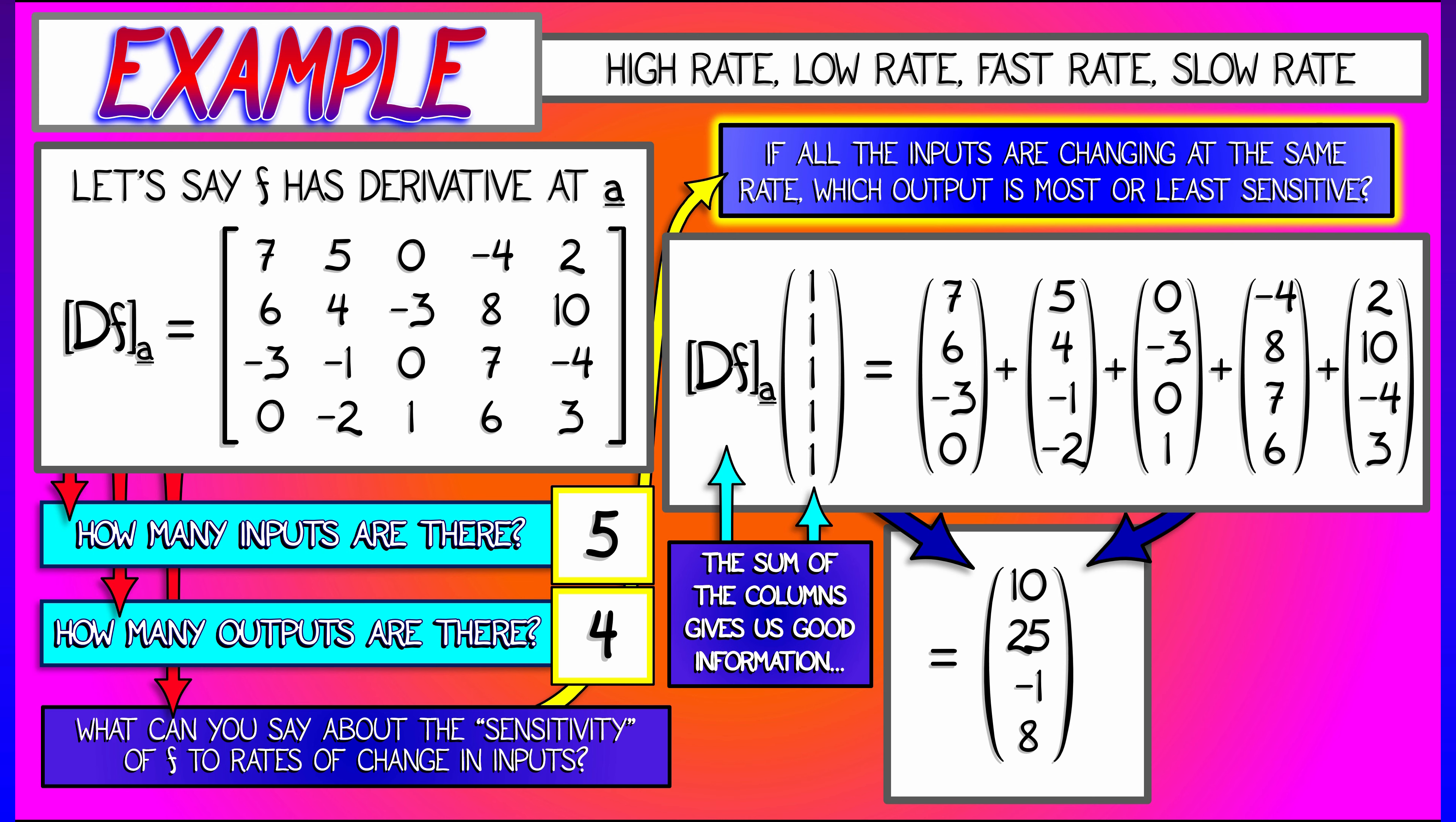Why? The derivative is a linear transformation. If I decrease all the inputs at the same rate, I'm just multiplying this by negative 1. If I increase at double this rate, I'm multiplying this vector by 2. And that lets us read off directly that the second output is 25 times as sensitive to these changes in the inputs as the third output.